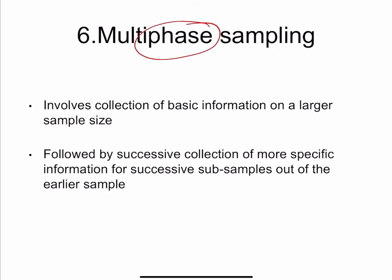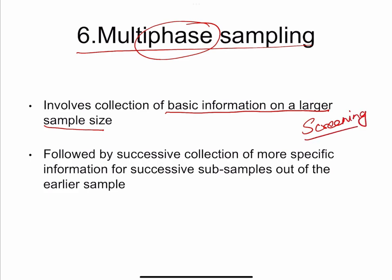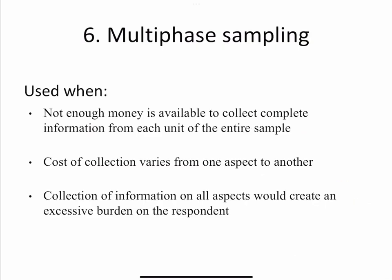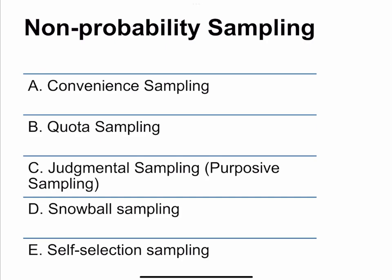The sixth and last probability sampling method is multi-phase sampling — not to be confused with multi-stage sampling. It involves collection of basic information on a larger sample size first — for example, a screening examination for the entire population — and from those screened individuals a diagnostic test is applied. This successive collection of more specific information from successive sub-samples out of the earlier sample is called multi-phase sampling. Multi-phase sampling is used when there is not enough money to collect complete information from each unit, or when collecting information on all aspects would create an excessive burden.